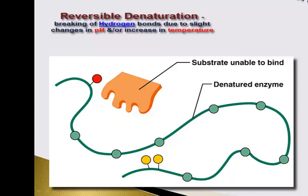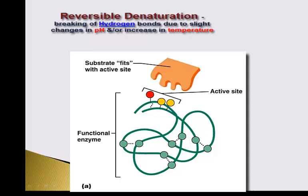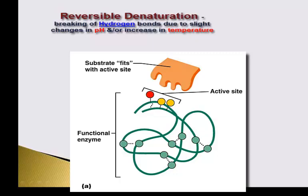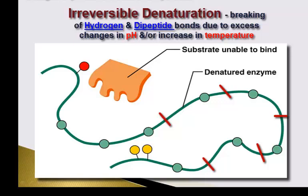If we only slightly change the pH or slightly change the temperature, we can then bring those conditions back to normal and the protein will fold back naturally, because the hydrogen bonding interactions occur naturally in water. That would be a reversible denaturation. However, if there is a drastic change in temperature or pH, the hydrogen bonds break and then those covalent peptide bonds between the individual amino acids break as well.